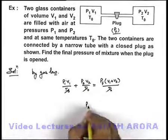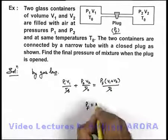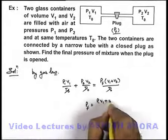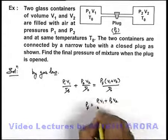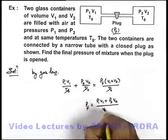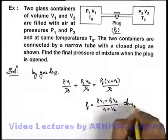Here T naught gets cancelled out, and the final pressure can be directly written as P1 V1 plus P2 V2 upon V1 plus V2. That's the answer to this problem.